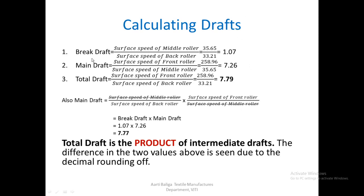To calculate draft values: brake draft is surface speed of middle divided by back. Taking the values from the previous slide, the answer is 1.07. For main draft, it is surface speed of front divided by middle roller, which comes out to 7.26. Total draft is surface speed of front divided by back, which comes out to 7.79. The total draft could also be calculated from the break draft and main draft already calculated.